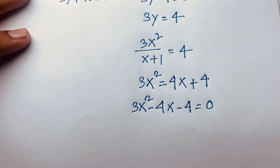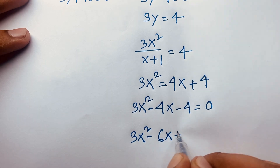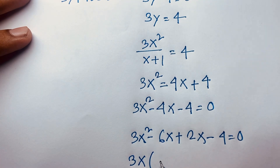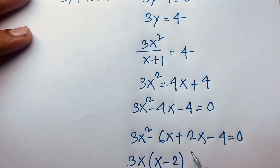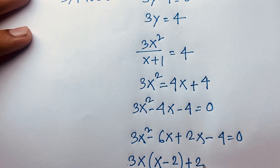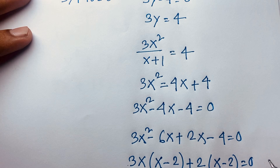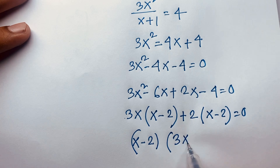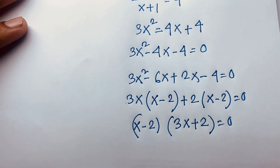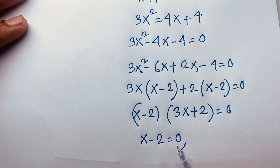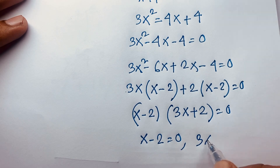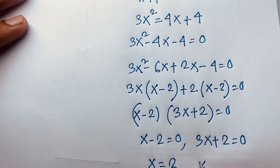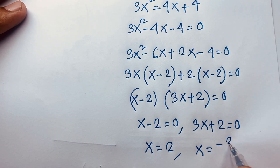Using middle-term factoring on 3x² − 4x − 4 = 0: we get 3x² − 6x + 2x − 4 = 0. Then 3x is common in the first pair, giving 3x(x − 2), and +2 is common in the second pair, giving +2(x − 2) = 0. So (x − 2)(3x + 2) = 0, giving x = 2 or x = −2/3.